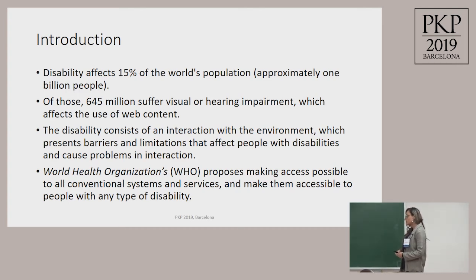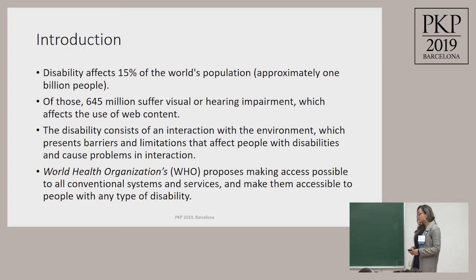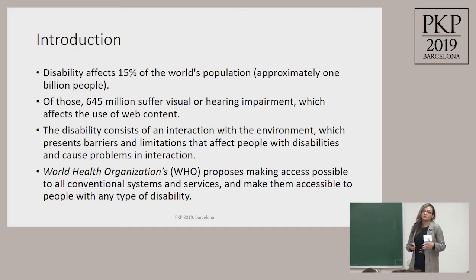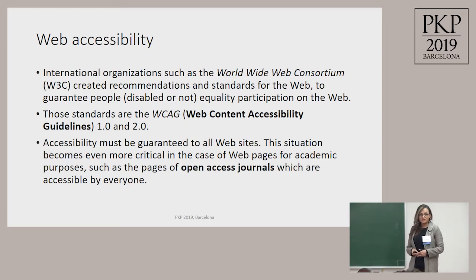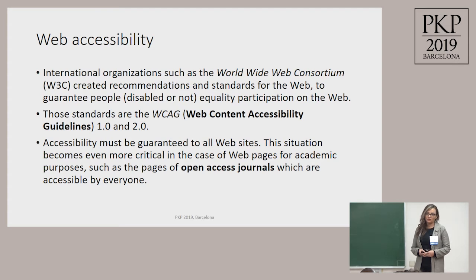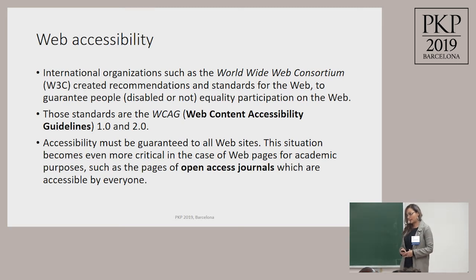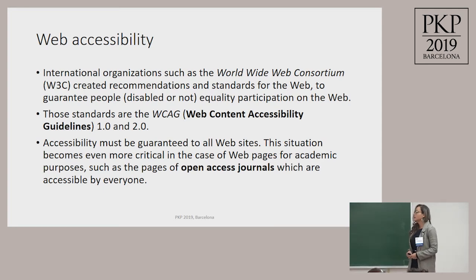The World Health Organization proposed making accessibility possible for everybody — for all conventional systems and services — the idea is to make them accessible for people with any disability or not. For that reason, organizations such as the World Wide Web Consortium create recommendations and standards for the web to guarantee the accessibility of any kind of site. For example, you have an e-commerce site and you would like everyone to access it. But this idea applies to other sites too, not just e-commerce — like academic sites.